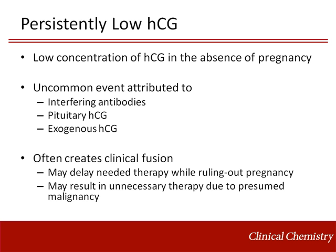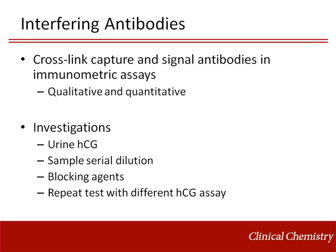In many healthcare systems, standardized patient care protocols are resulting in an increasing number of women undergoing HCG testing to rule out a possible pregnancy prior to interventions that could harm a fetus, without regard to chronological age or likelihood of pregnancy. Persistently low HCG often creates a clinical dilemma and may delay therapy or result in unnecessary treatments for presumed malignancies. Interfering antibodies cause interference by cross-linking the capture and signal antibodies used as reagents in immunometric assays, and have been documented as causing false positive or falsely increased results in both qualitative and quantitative HCG assays.